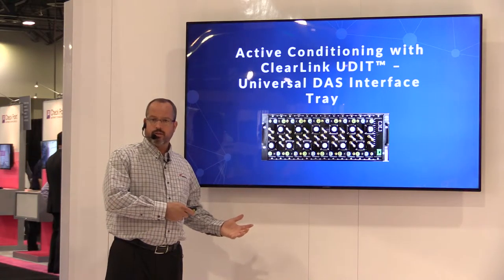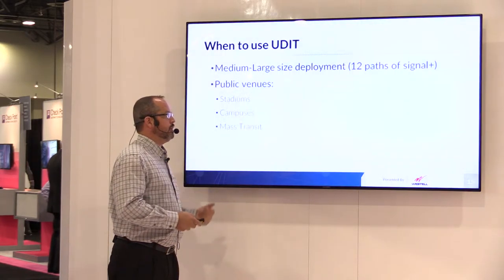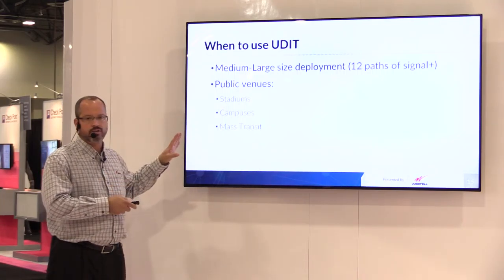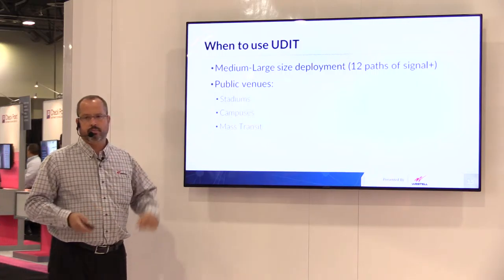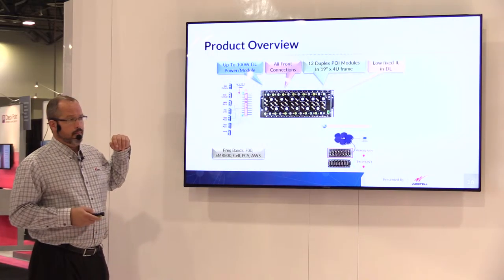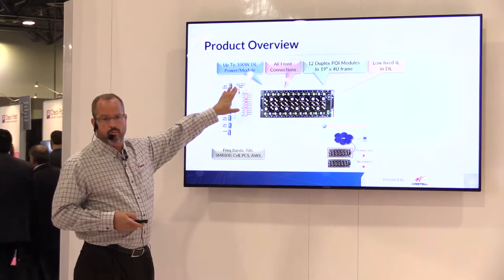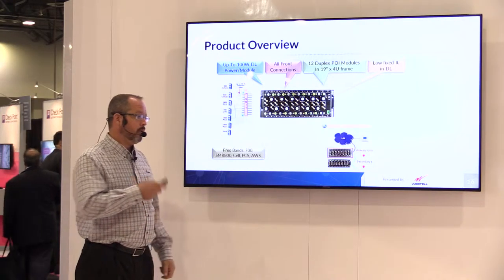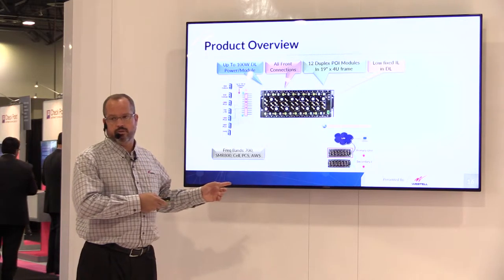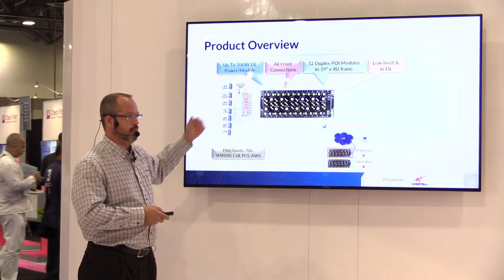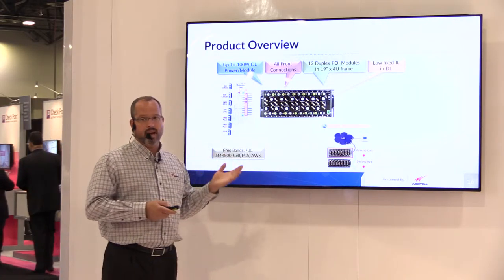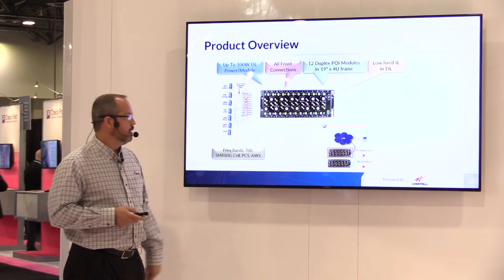Now we'll talk a little bit about the active trays. Typical application spots are public venues, any large stadium, campus, mass transit. Key features and benefits: you can come into these at up to about 100 watts, which is 50 dBm, all the way down to zero dBm. This particular product has the lowest insertion loss in the industry between the input and the output. In high power mode it's about 14 dB of loss, and in low power mode it's only about three to five dB maximum. You can come into low power mode as high as 40 dBm, which is key.